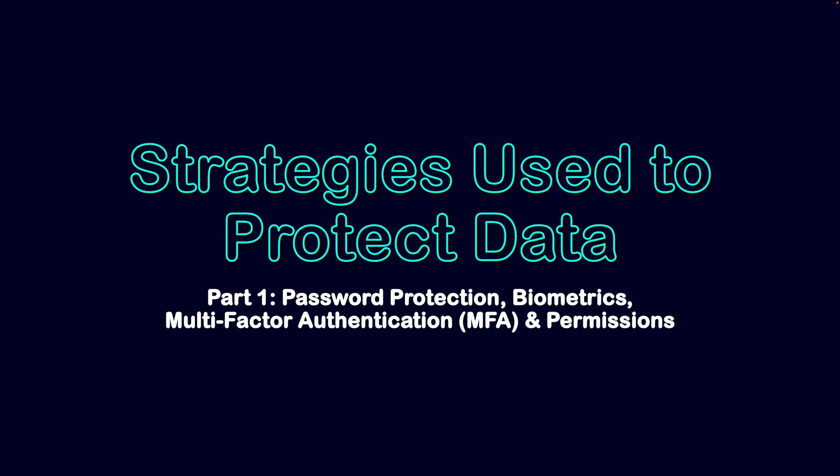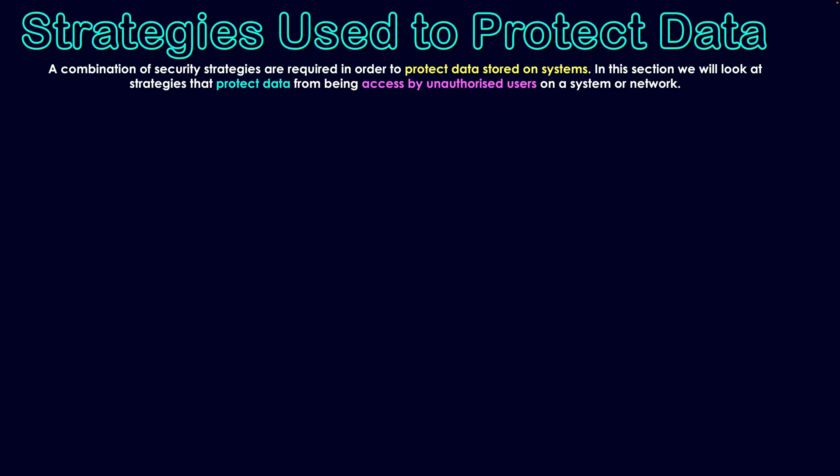Strategies used to protect data. Part one: password protection, biometrics, multi-factor authentication, and permissions. A combination of security strategies are required in order to protect data stored on systems. In this section, we'll take a look at strategies that protect data from being accessed by unauthorized users on a system or network — essentially checking who's coming into a network and whether or not they have the right to access information.